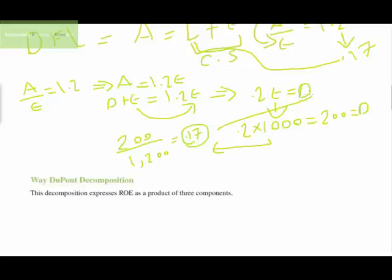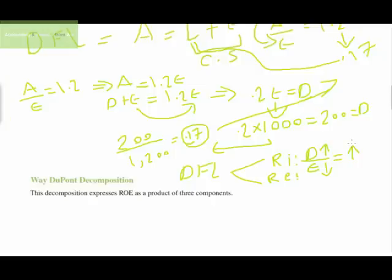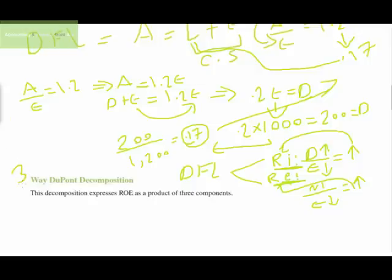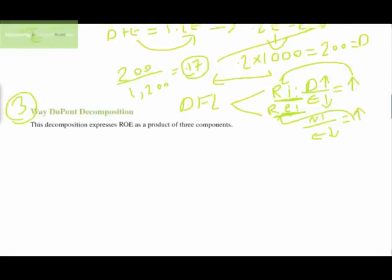The degree of financial leverage amplifies both risk and return. From the debt-to-equity ratio: higher debt and lower equity means a higher debt-to-equity ratio, which equals higher risk. At the same time, lower equity in the ROE formula (net income ÷ equity) means higher return on equity. That's why financial leverage amplifies both risk and return.